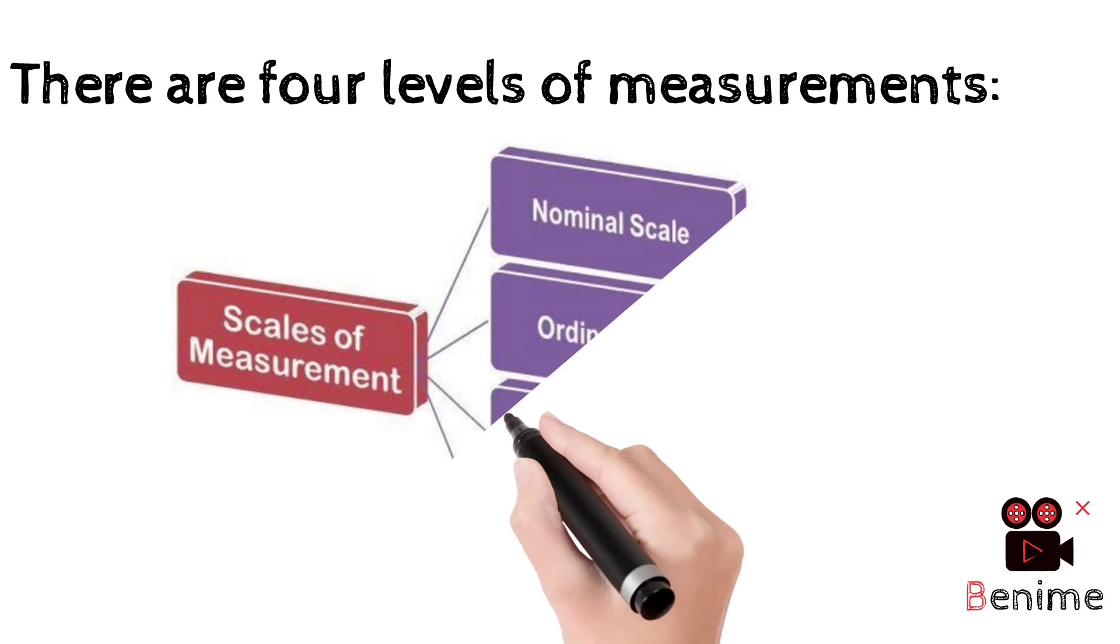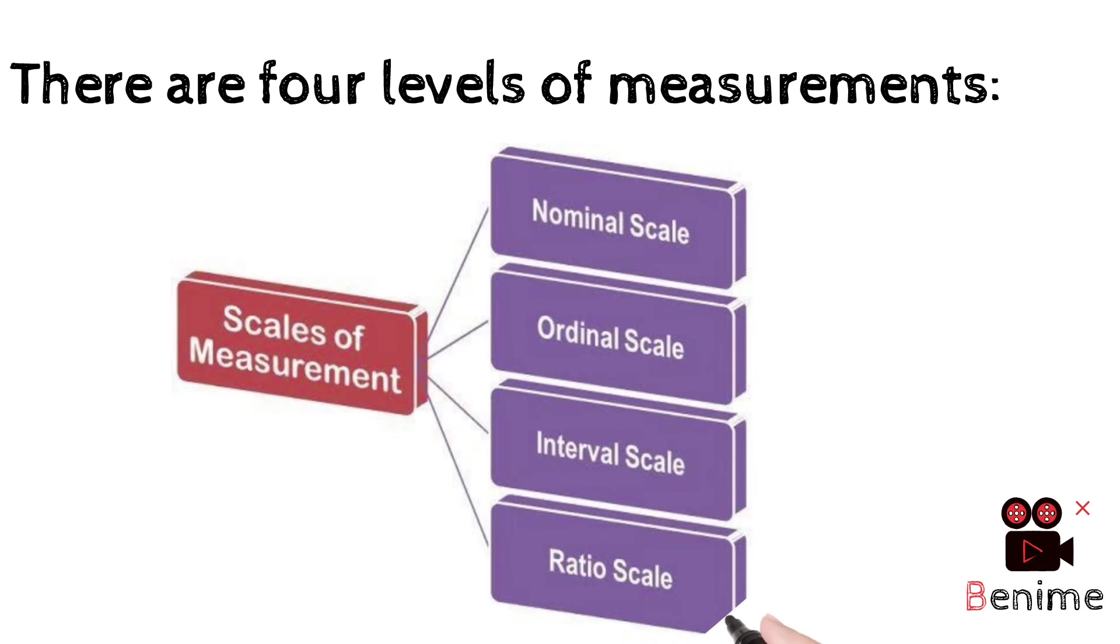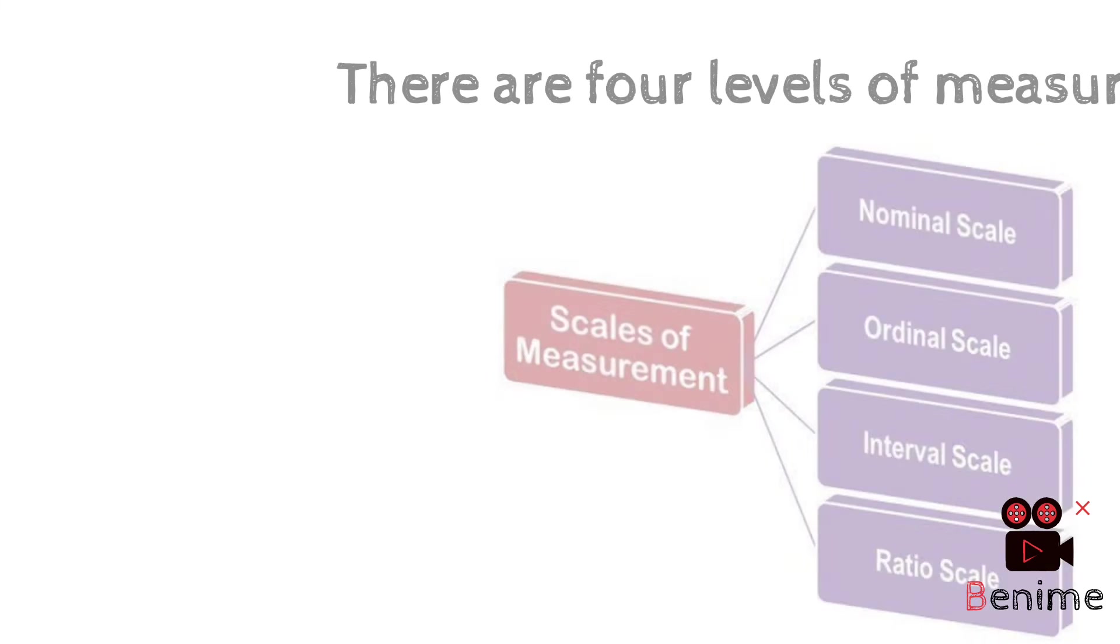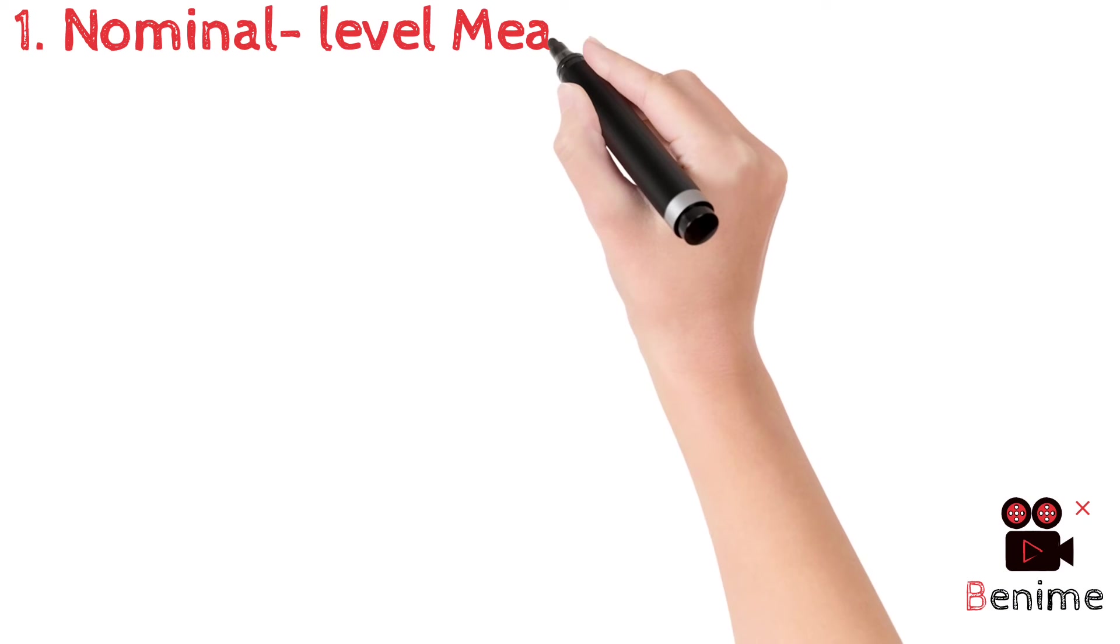According to the characteristics, the assignment of number to object. There are four levels of measurements. First one nominal, second one ordinal measurement, third one interval measurement, fourth one ratio. Let us see one by one.